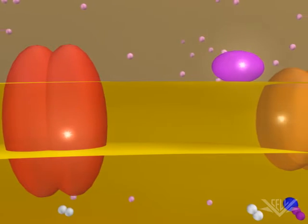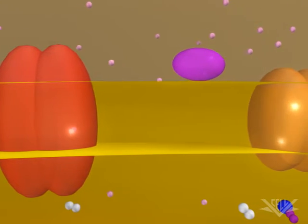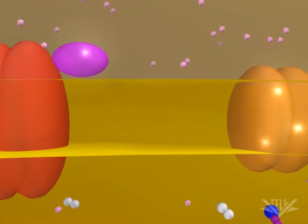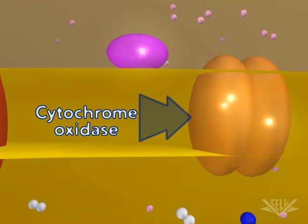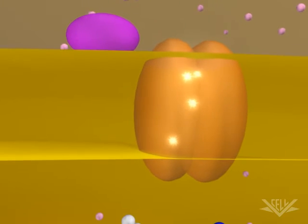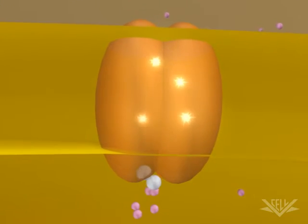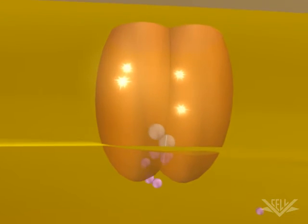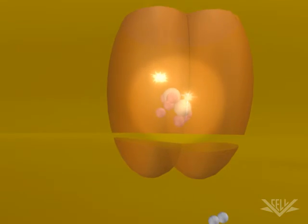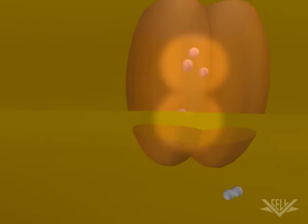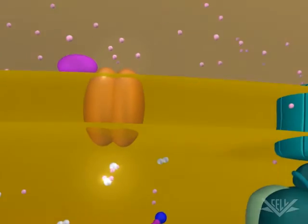The next major step occurs in the cytochrome oxidase complex, which requires four electrons. These four electrons interact with a molecular oxygen molecule and eight hydrogen ions. The four electrons, four of the hydrogen ions, and the molecular oxygen are used to form two water molecules. The other four hydrogen ions are pumped across the membrane.